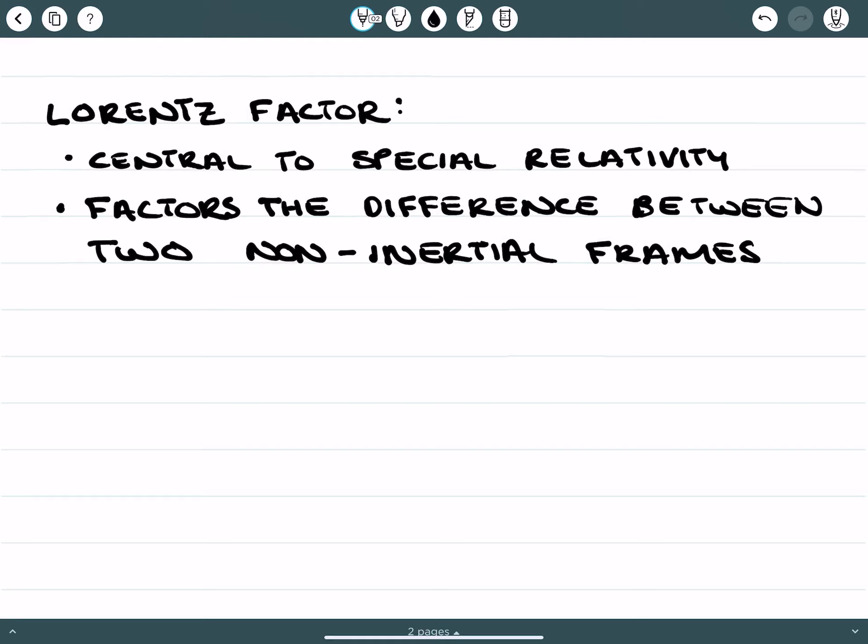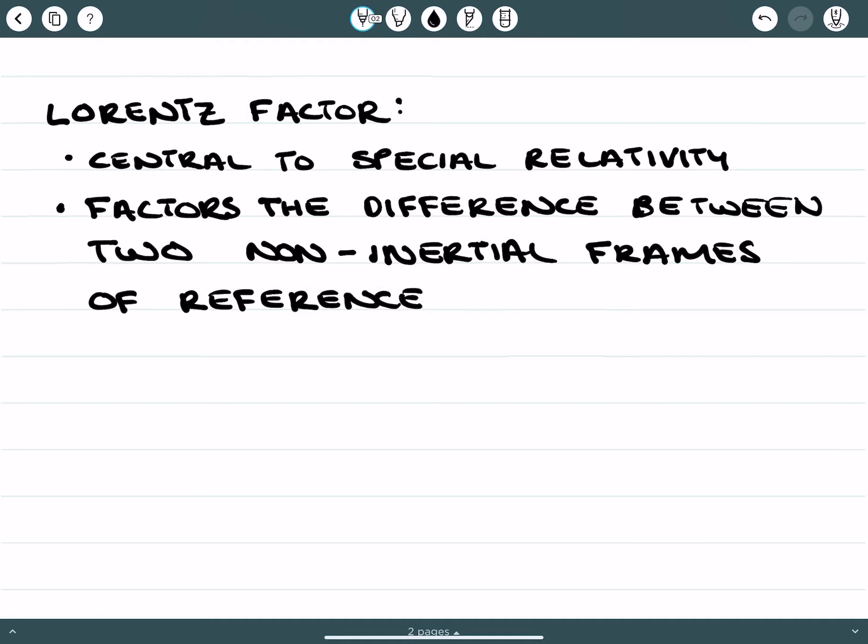Now, you should understand what inertial, two inertial frames of reference are. That's when two frames of reference are moving in the same direction and at the same velocity. Obviously, when we talk about non-inertial frames of reference, what we're referring to here is frames of reference that are either moving in opposing directions or various directions to one another or they're moving at different speeds.